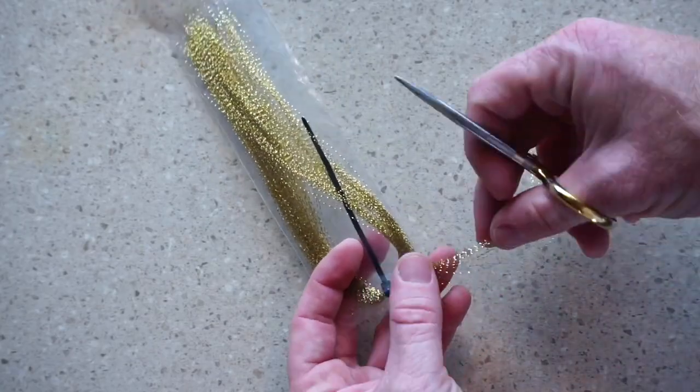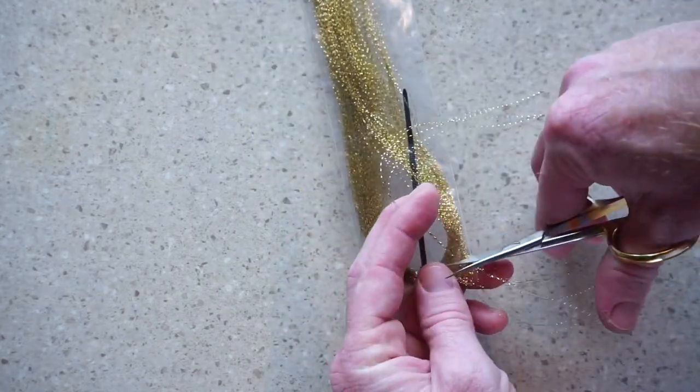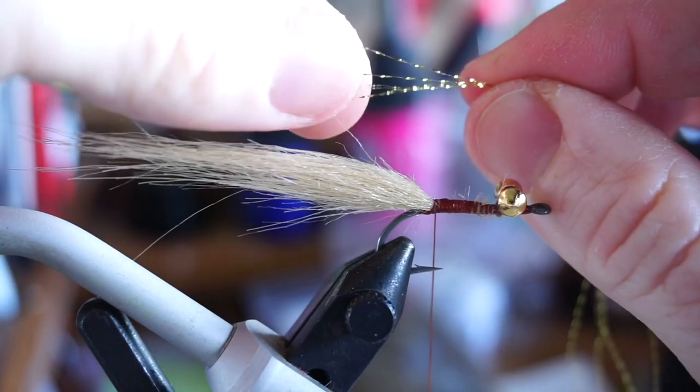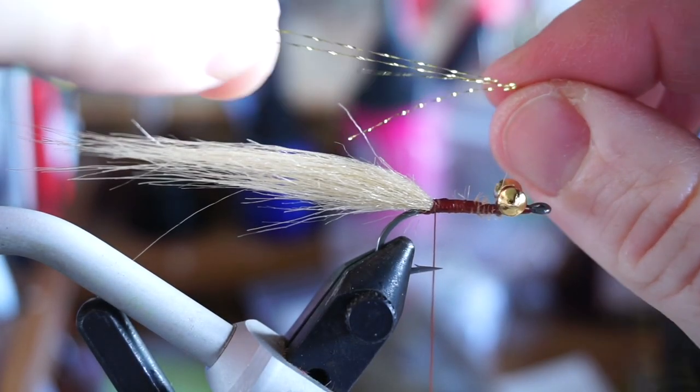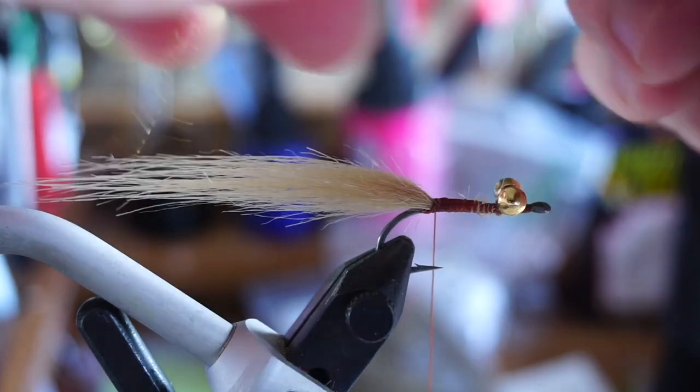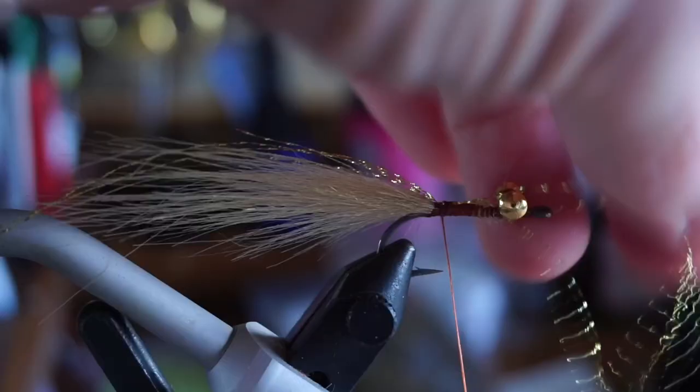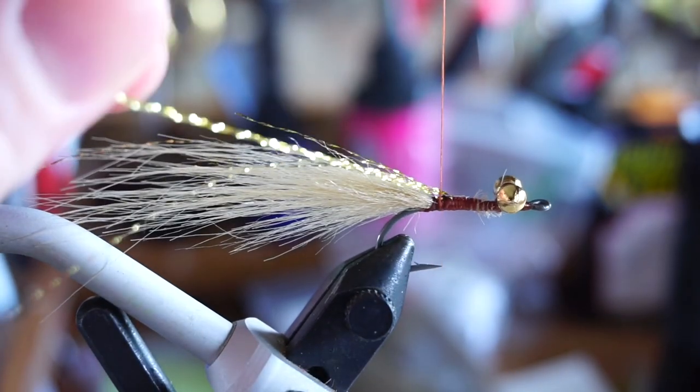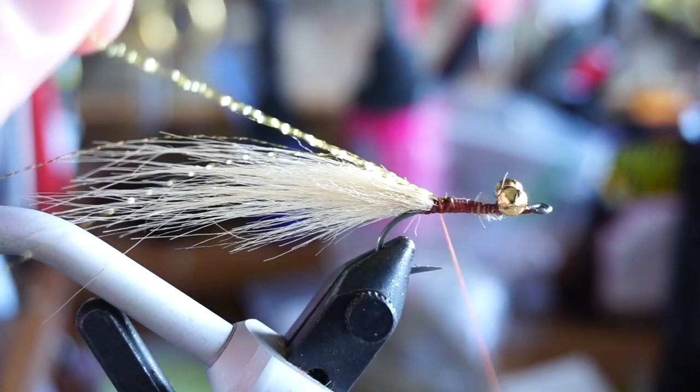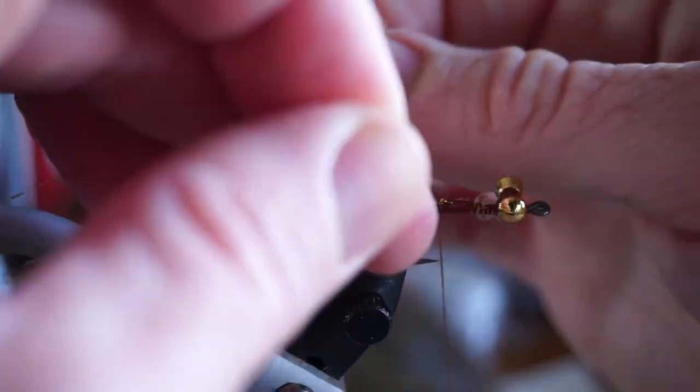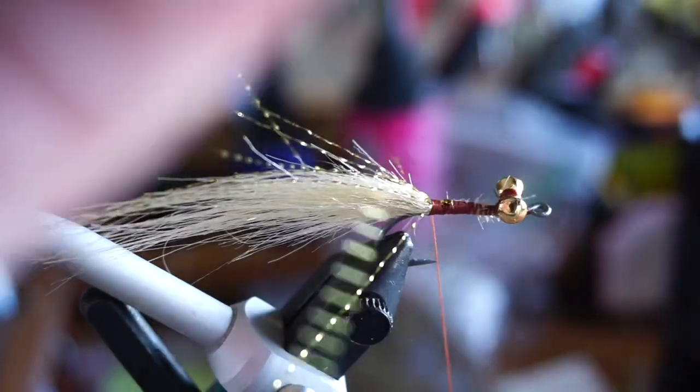For flash and a bit of an antenna look, clip off four strands of crystal flash. Pull out two of the sections to make them longer and tie them in so they extend just past the tail. Then pull back the forward facing fibers and tie them in rearward as well, and cut them short so they extend only as far as the other shorter flash fibers.